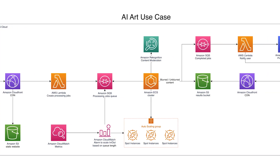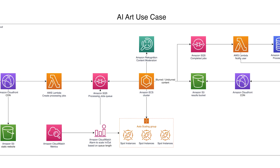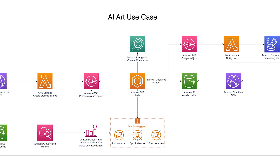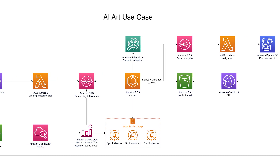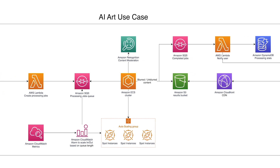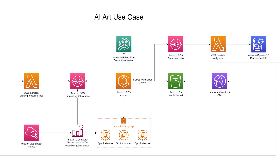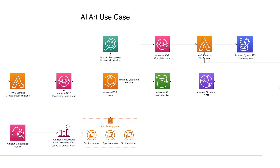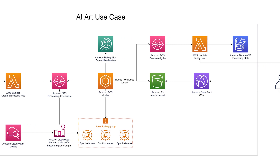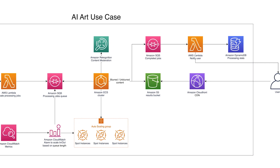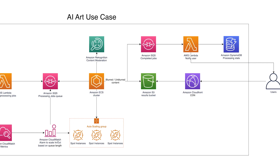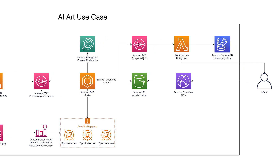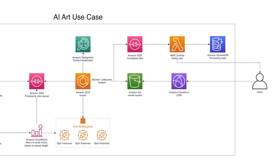ECS always has a group of spot instances that are always ready to process new requests. It takes anywhere from 10 seconds to a minute to generate a picture. Then these pictures are being stored in S3 and being checked by a moderation service. And then they are sent to another queue that sends data to DynamoDB and notifies the user.